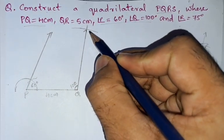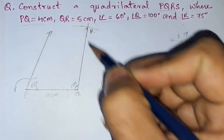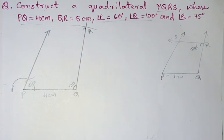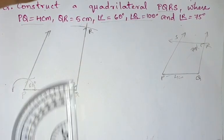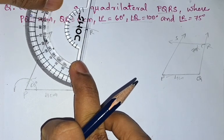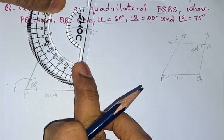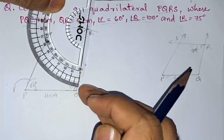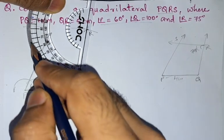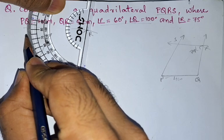So this is R. From R we are having 75 degrees, so we will use the protractor to draw 75 degrees. Start from here, zero. So this is 75.